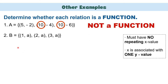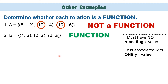Set B = {(1,A), (2,A), (3,A)}. Looking at the x values, we have 1, 2, and 3. There is no repeating x value. Therefore, this one is a function.